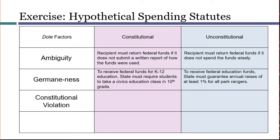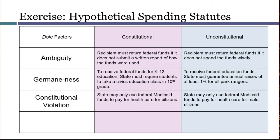Next, Congress cannot use its spending power to pursue actions that would be unconstitutional for the federal government to do itself. For example, under the Eighth Amendment, the government cannot impose cruel and unusual punishment. This means that Congress could not give money to states to subsidize their criminal justice systems on the condition that the states impose cruel and unusual punishments. Please pause the video and invent some spending statutes that do or do not violate this principle. My example involves equal protection: the federal government cannot itself engage in sex discrimination, so it can't require recipients of federal funds to engage in sex discrimination either.